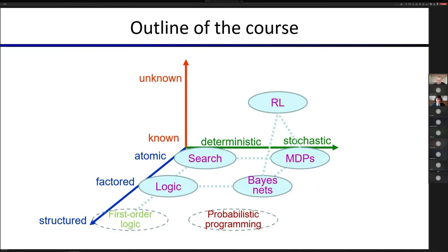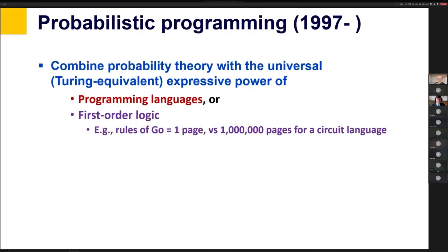And I'll briefly mention what happens when structured representations and stochastic worlds come together in a field called probabilistic programming. So probabilistic programming, as I said, is what happens when structured representations and probability theory come together.